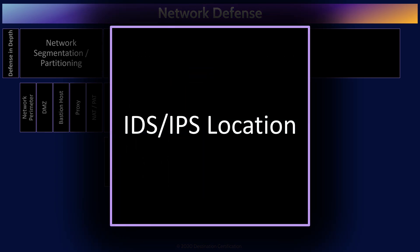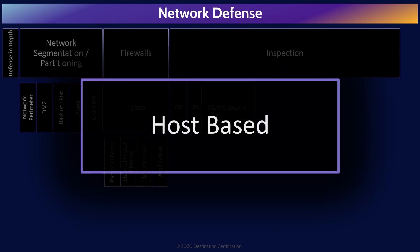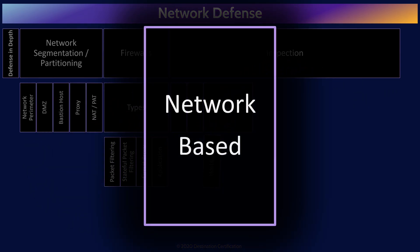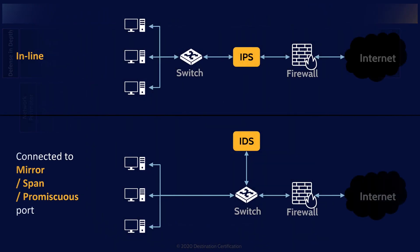There are two major locations where we can put IDSs and IPSs. Host-based means the IDS or IPS is installed on a specific host, typically a high-value server, and it monitors just that host. If you want to monitor multiple hosts, you'd need multiple host-based systems, one on each host. A network-based IDS or IPS is connected to a network segment and monitors all the traffic within that segment. One method of connection is inline, meaning all traffic coming in and out of the network segment must pass through the IDS or IPS. IPSs are often installed inline, and the advantage is that if the IPS detects traffic it doesn't like, it can easily block it.